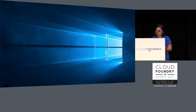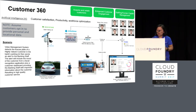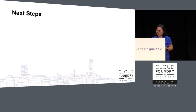This is the customer 360 app I mentioned earlier. We mimic this scenario as a customer walking into the bank, and immediately such information like the license plate is picked up by the bank to highlight who he is, and also what his spending habits are, so they could do the target marketing.